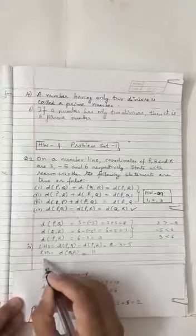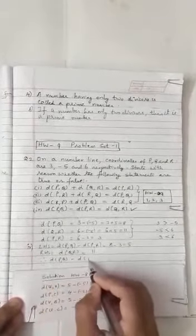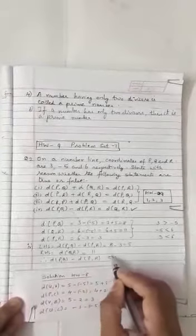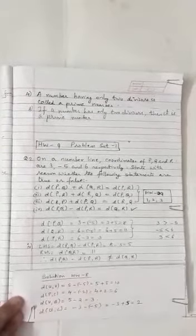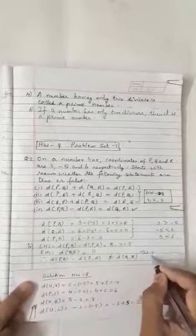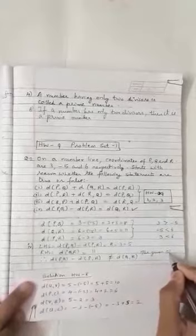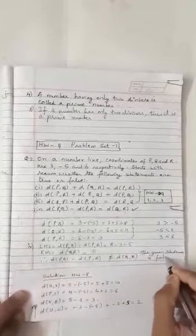So what will you write? Therefore, distance PQ minus distance PR not equal to distance QR. Therefore, the given statement is false.